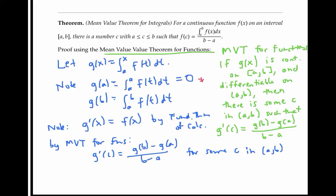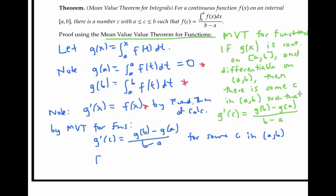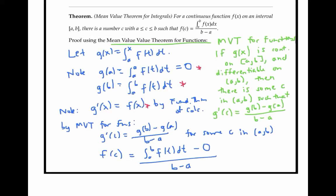If we substitute in the three facts above into our equation, we get f of c is equal to the integral from a to b of f of t dt minus zero, over (b minus a), which is exactly the conclusion that we wanted to reach. This shows that the mean value theorem for integrals really is the mean value theorem for functions, where our function is an integral. And this completes the second proof of the mean value theorem for integrals.